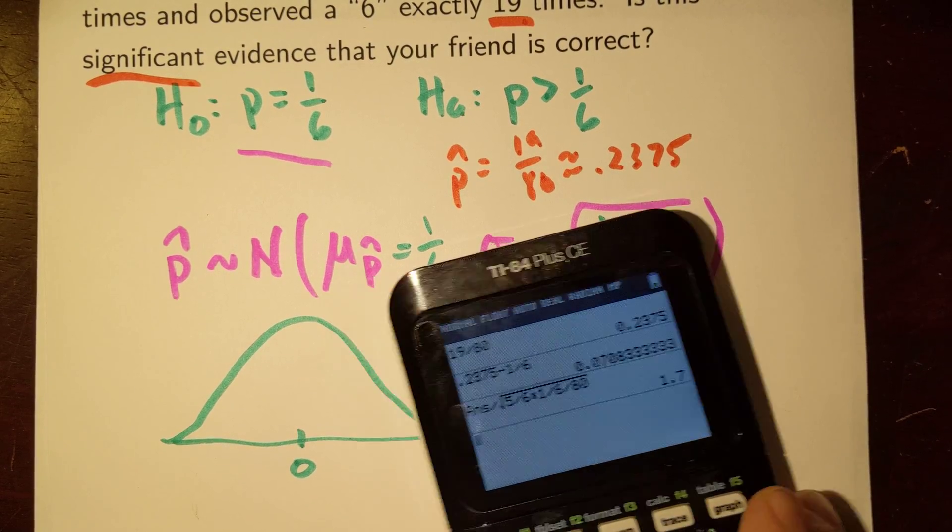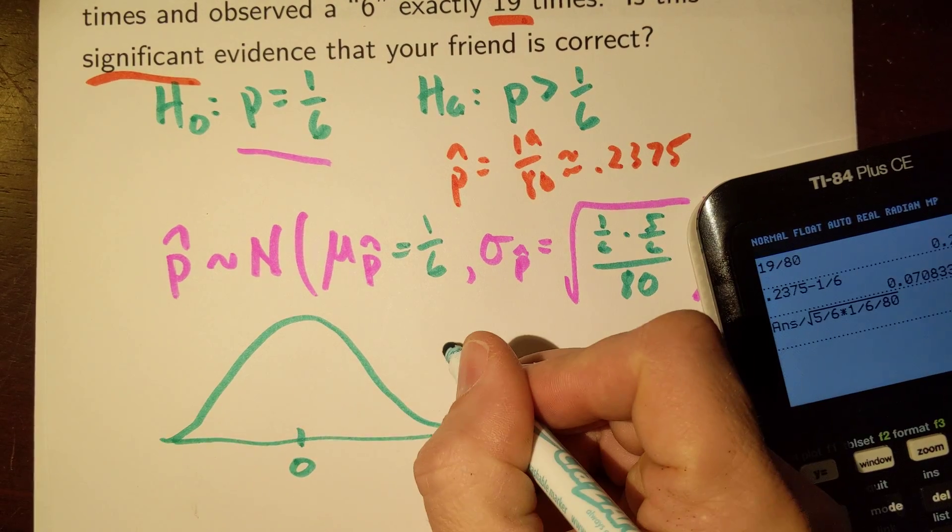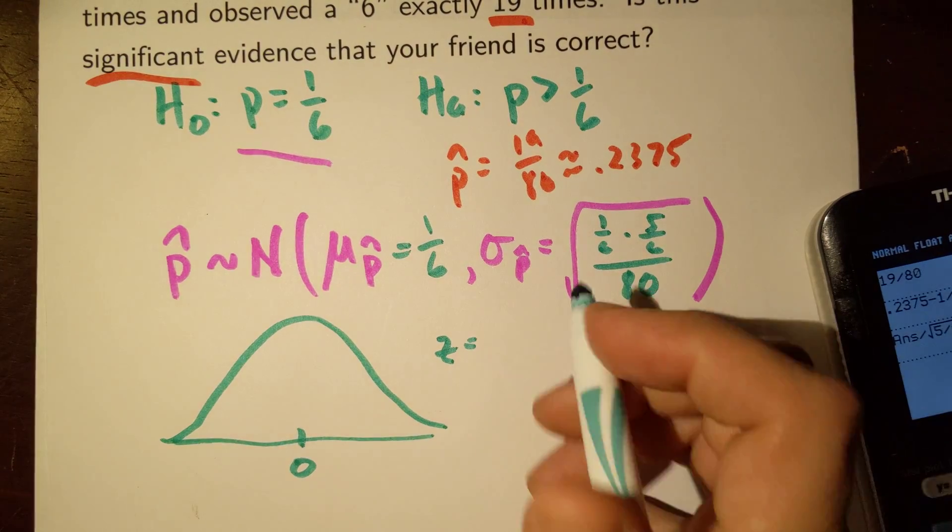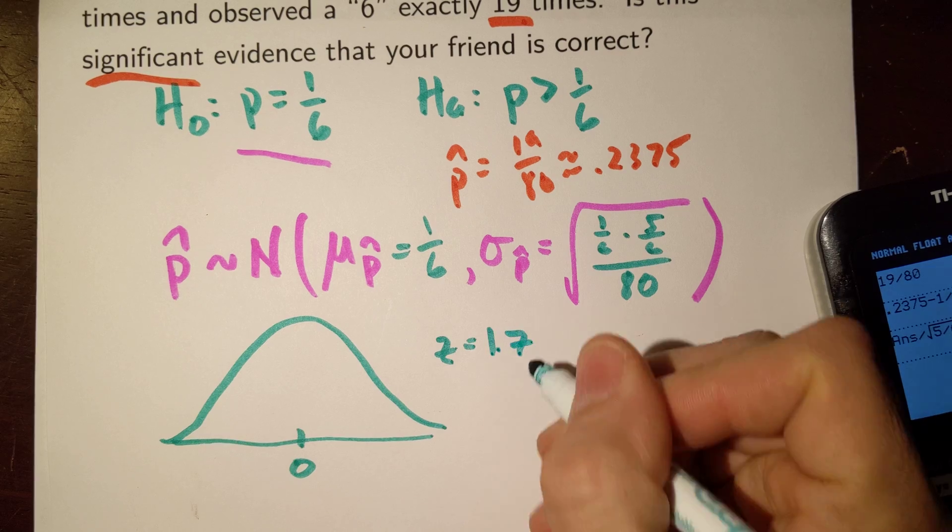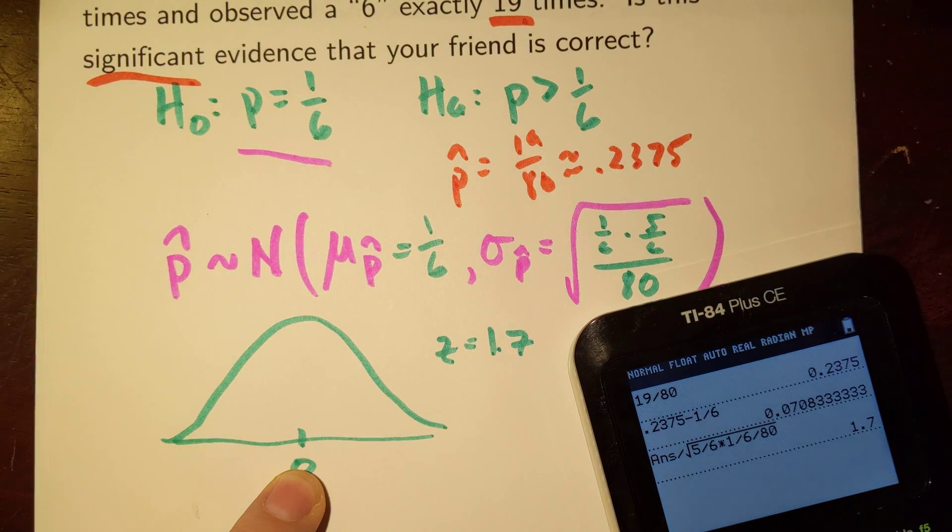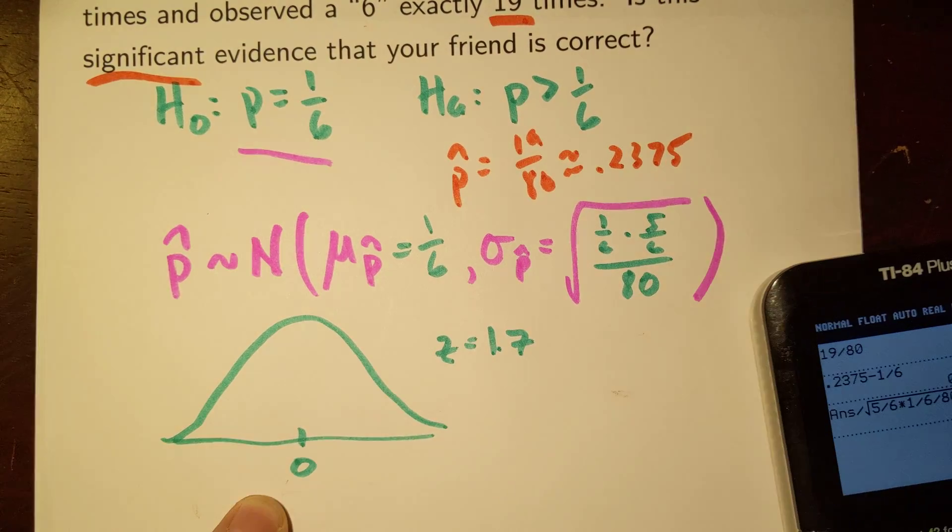And here I got about 1.7. So, okay, that's interesting. I got a Z-score of my p-hat of about 1.7.